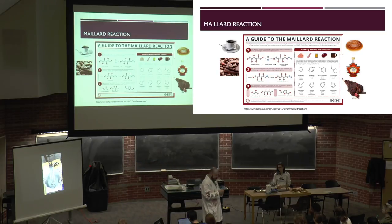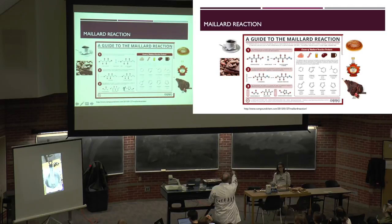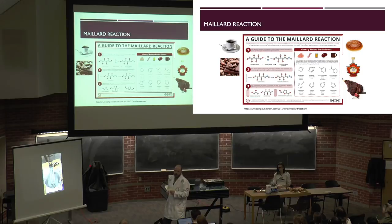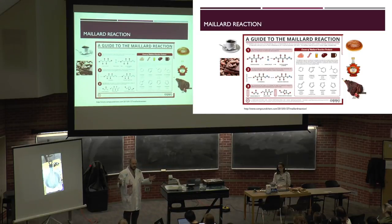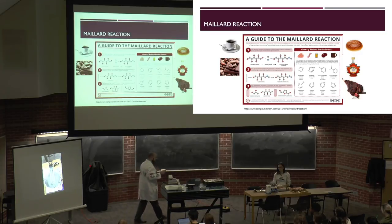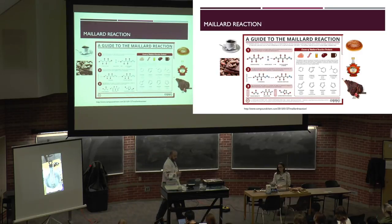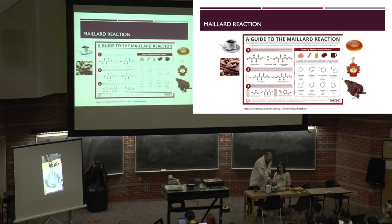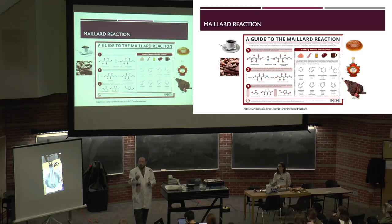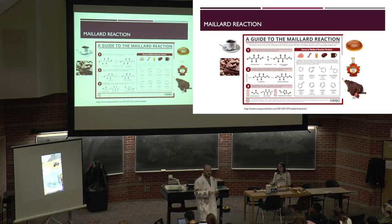One molecule of note is hydroxymethylfurfural (HMF). HMF undergoes conjugation — polymerization — where this small molecule reacts with other small molecules present. That polymerization is what gives rise to the brown color. Color in molecules comes from conjugation: the presence of alternating double and single bonds in long structures allows electrons to absorb and sometimes emit light.